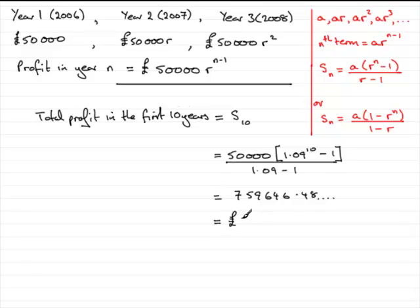so giving it to the nearest 10,000, it's going to be 760,000 pounds. We'll just put here to the nearest 10,000 pounds. And that just completes that.